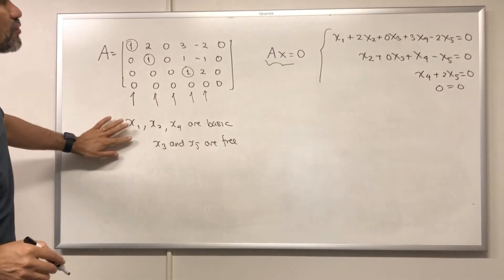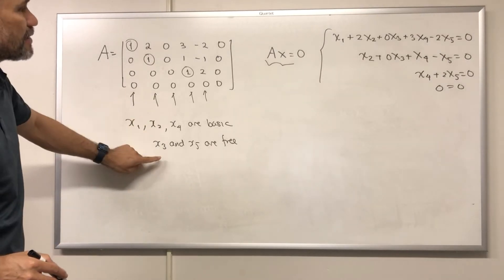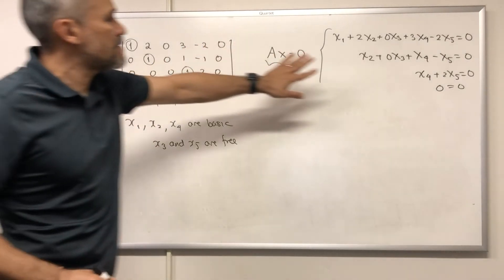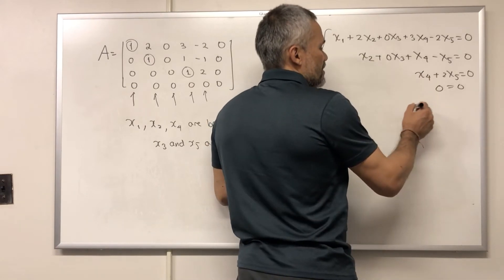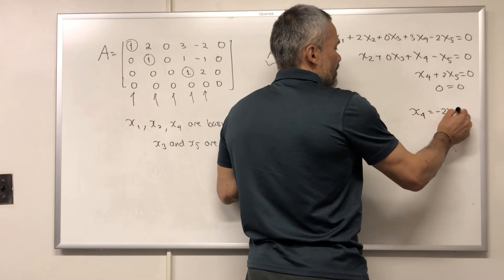Then, in order to solve the system, we write the basic in terms of the free. This is the system and then here we write, we start with the last one. X4 is negative 2X5.